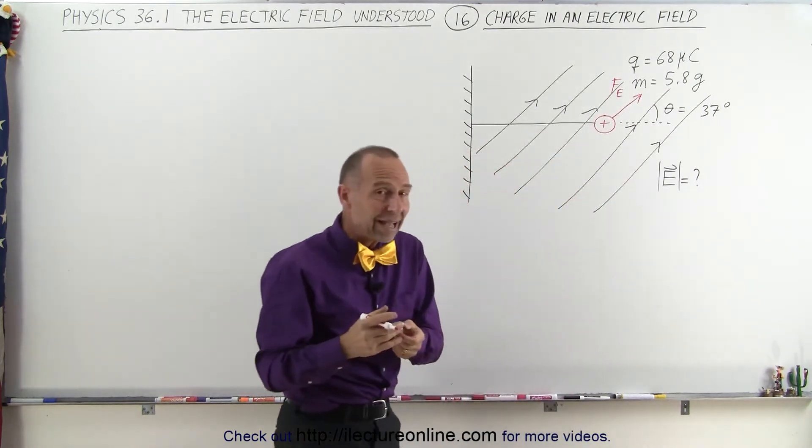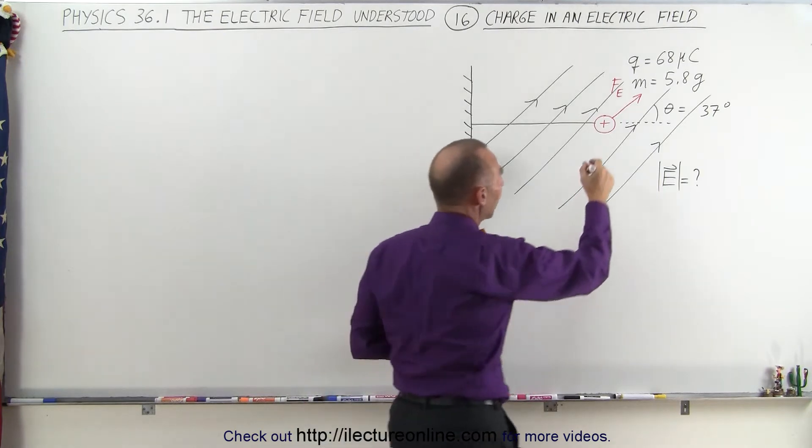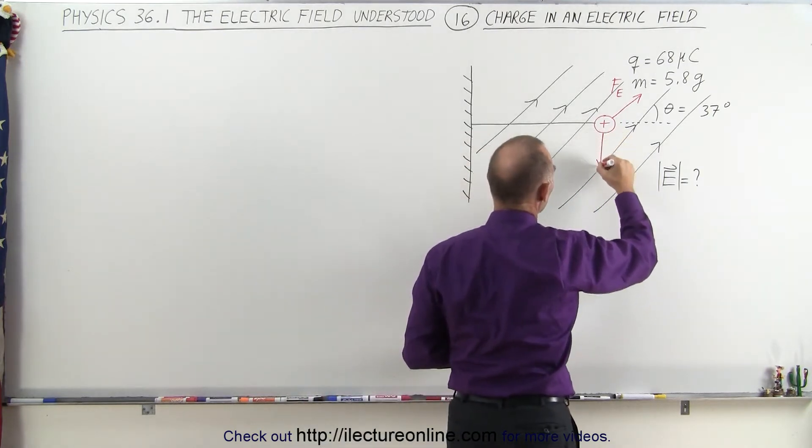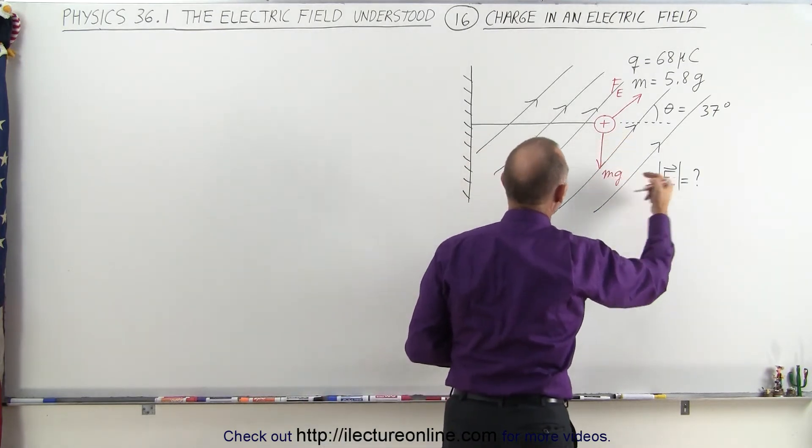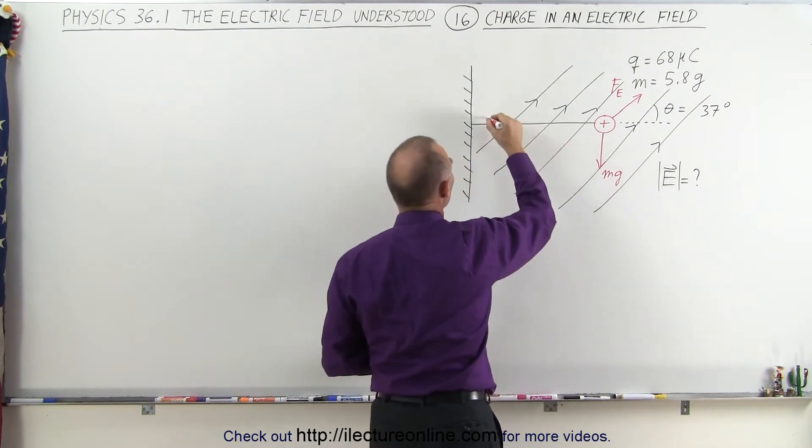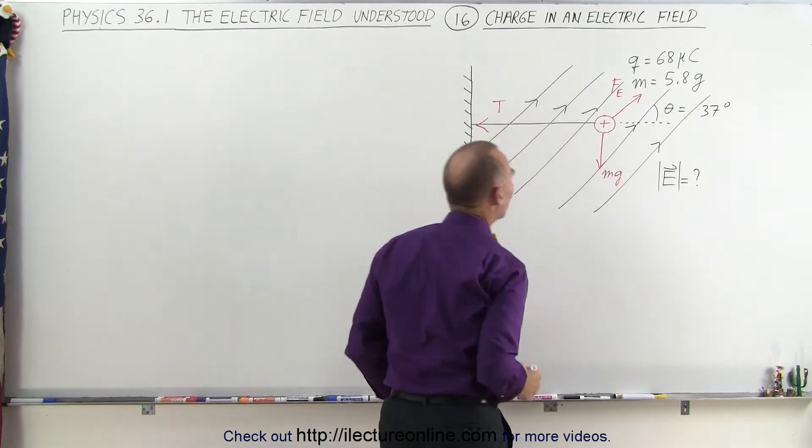Then of course it has mass, and so therefore there's a force of gravity pulling it downward, so we'll call that Mg, pulling it downward. And then finally there's a tension on the string pulling it in this direction, so let's call that T.